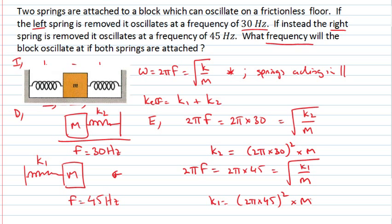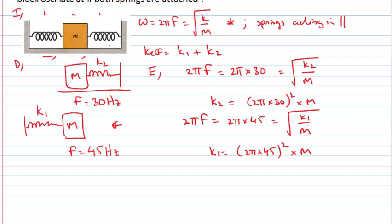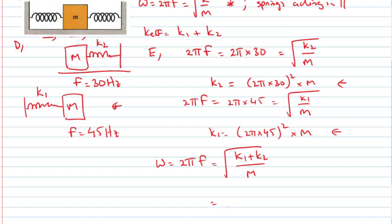And so what I'm after is the frequency of oscillation for when I've got two springs. So the frequency of oscillation when I've got two springs, ω is equal to 2πf. That's now given by the square root of the effective spring constant with two springs attached in parallel, which is k1 plus k2 divided by m. I can evaluate that by substituting in for k1 and k2. So I've got 2π times 45 all squared times the mass for k1, plus 2π times 30 all squared times the mass for k2, all divided by the mass.